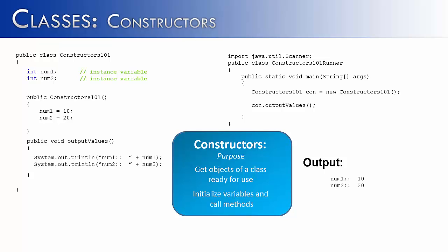The second purpose is to call methods. For example, let's say we are writing a program about a card deck. In almost any card game, what is something you would want to do before the game starts? Shuffle the deck. So inside the constructor I've added the method shuffleDeck. Another example would be displayMenu — if you're creating a game and the first thing you wanted to show was a menu with options like loadGame, saveGame, newGame, you would want that to be the first thing that happened when the game object was created.